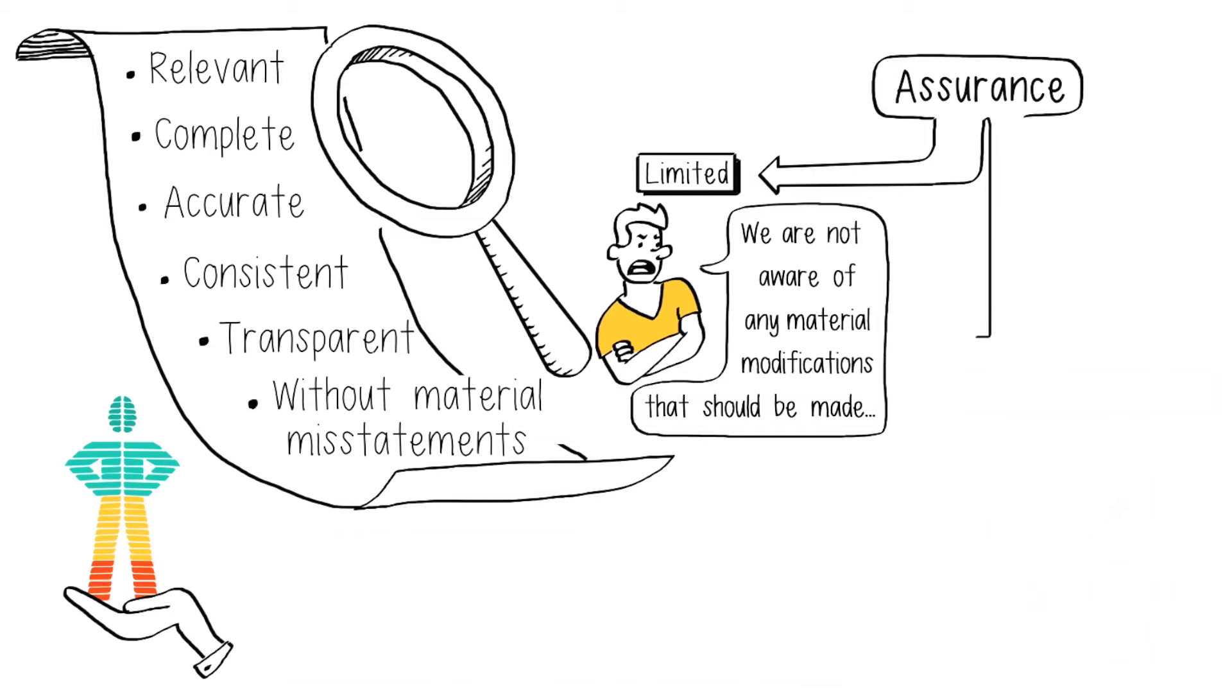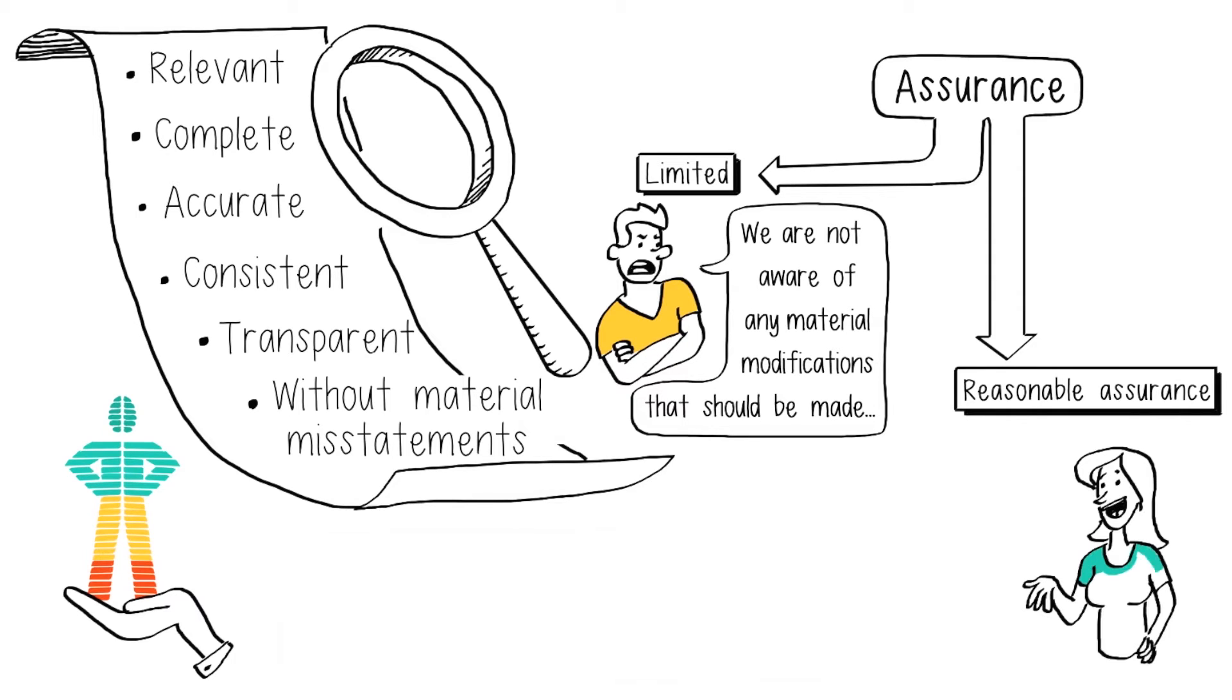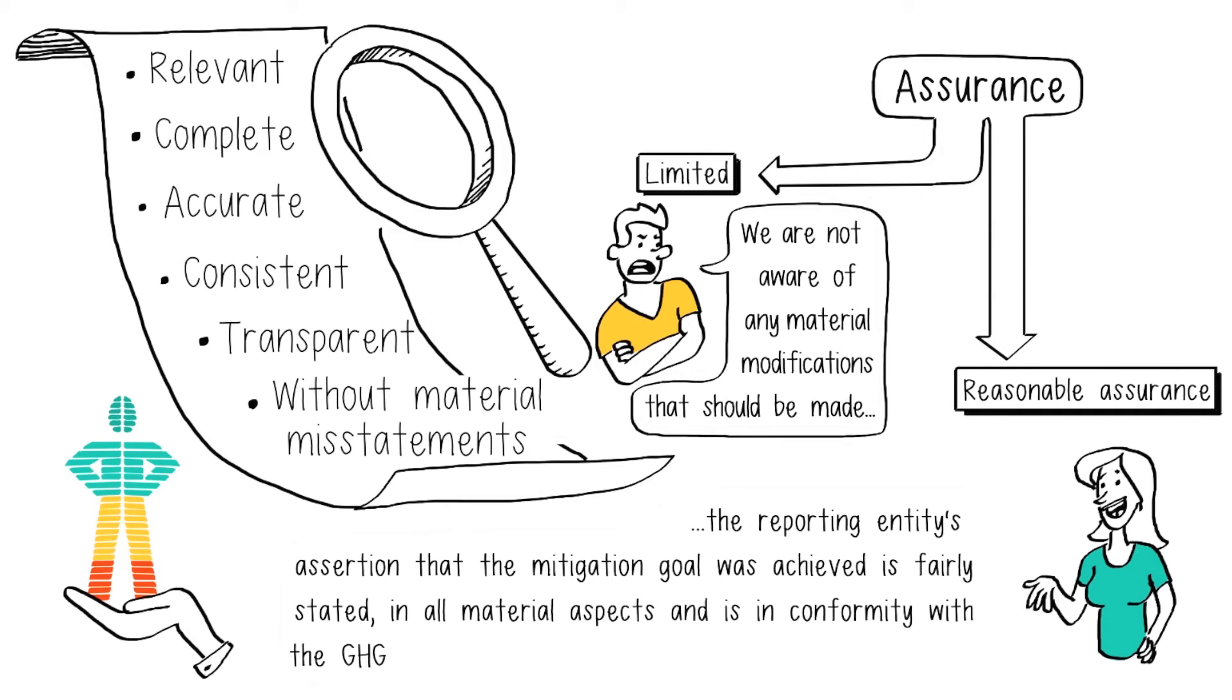Or alternatively, it can provide reasonable assurance, meaning that the verifier has a positive opinion indicated by language such as: the reporting entity's assertion that the mitigation goal was achieved is fairly stated in all material aspects and is in conformity with the GHG Protocol Mitigation Goal Standard.